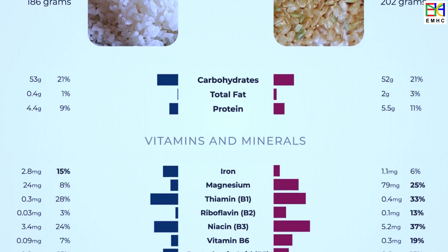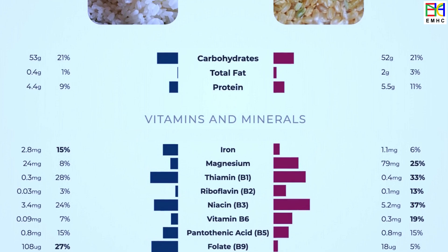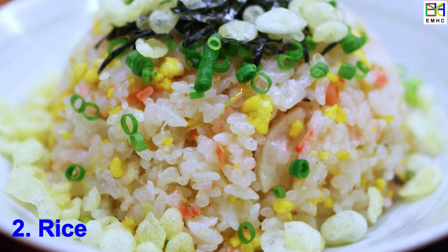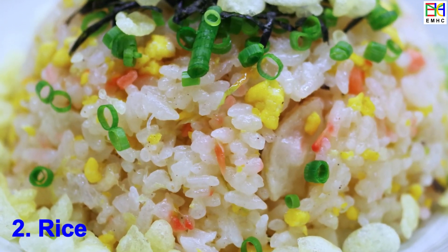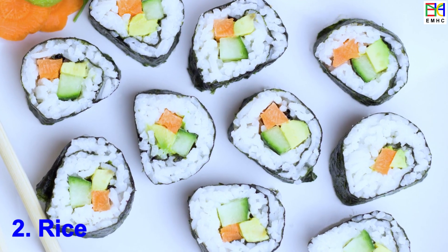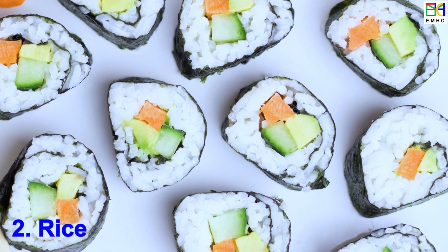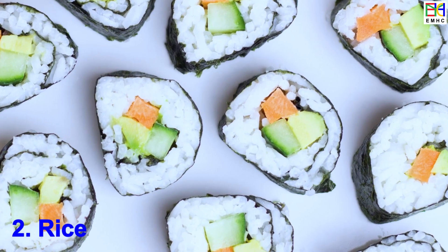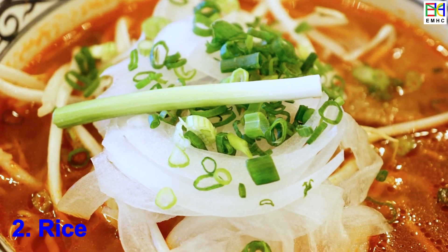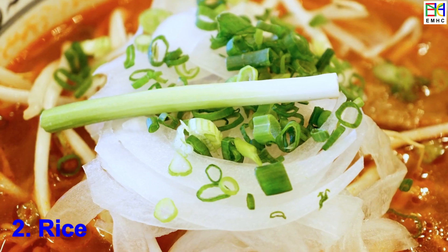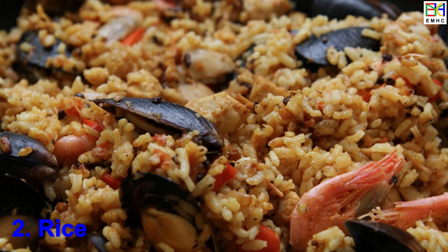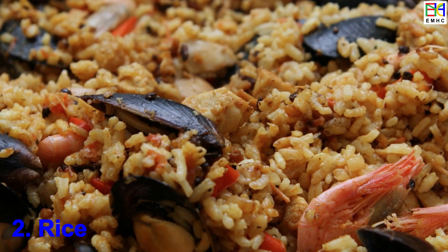Brown rice is higher in fiber and certain minerals compared to white rice. As a staple food, rice serves as a primary ingredient in numerous dishes, including rice bowls, stir-fries, curries, sushi, and rice puddings. It can be cooked and consumed as a standalone side dish or incorporated into complex recipes with meats, vegetables, and spices.